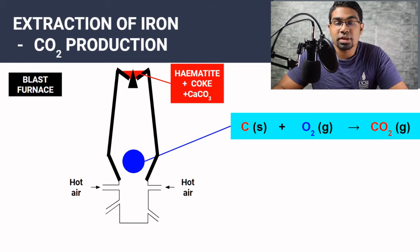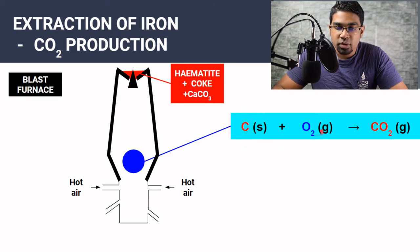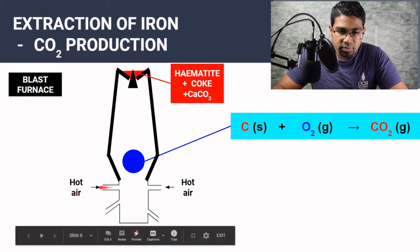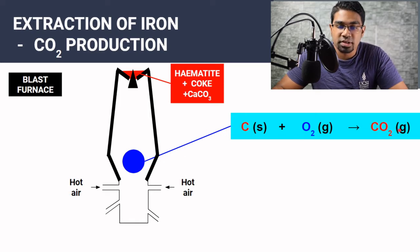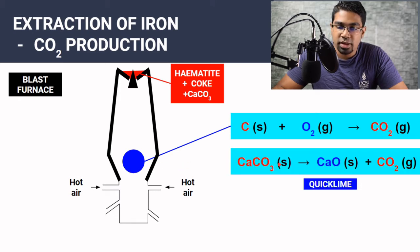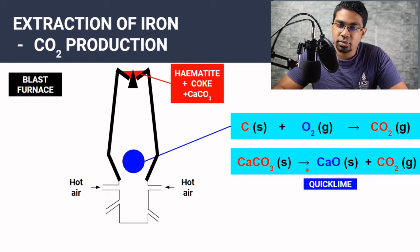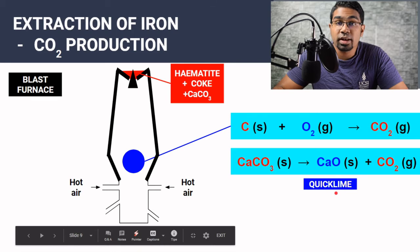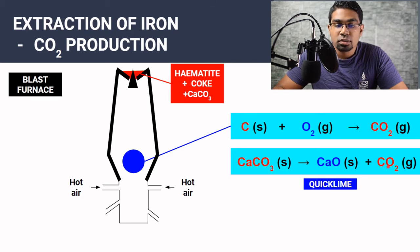The first step: carbon from the coke reacts with oxygen from the hot air blasted in at the bottom to form carbon dioxide — C + O₂ → CO₂. Also due to the heat, limestone (calcium carbonate) breaks down into calcium oxide, also called quicklime, and carbon dioxide. So this first stage is all about carbon dioxide production.